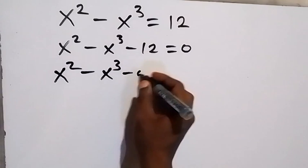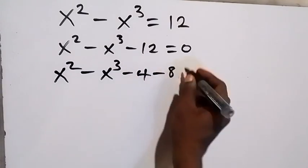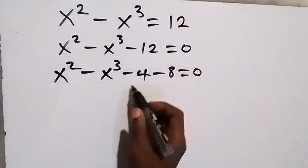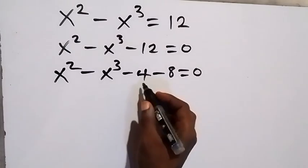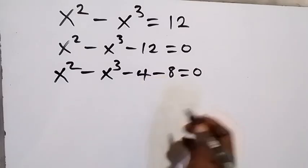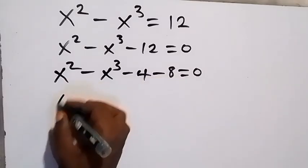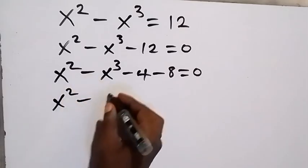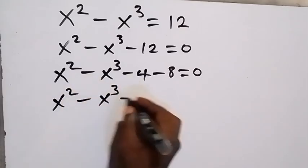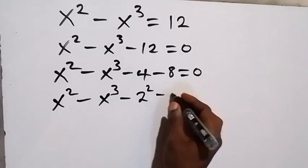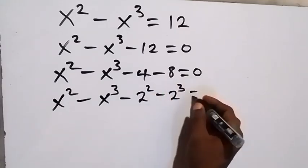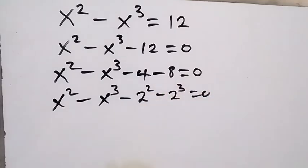We write minus 4 minus 8, which equals to zero — because minus 4 minus 8 is the same as minus 12. From here, we can express 4 and 8 as powers: this becomes x squared minus x cubed, then minus 2 squared minus 2 cubed equals to zero, since 2 squared is 4 and 2 cubed is 8.